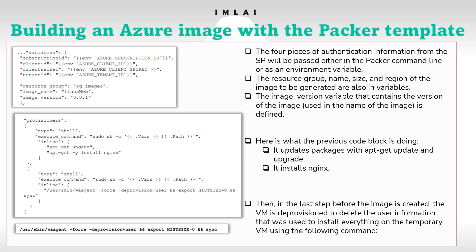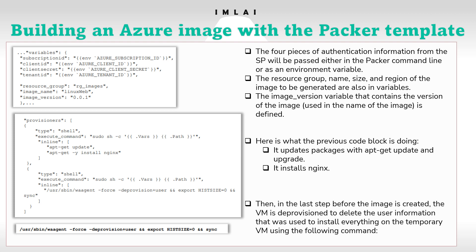We have just seen the structure of a Packer template, which is mainly composed of three sections: variables, builders, and provisioners. From there we saw a concrete example with the writing of a Packer template to generate a custom VM image in Azure that uses scripts of provisioning commands. Our Packer template is finished and ready to be run. Once executed, if you follow this exactly and go to Azure, you would find the Azure image created.